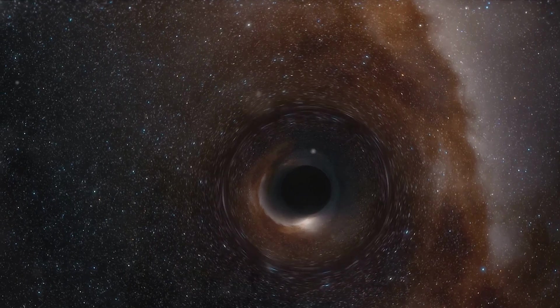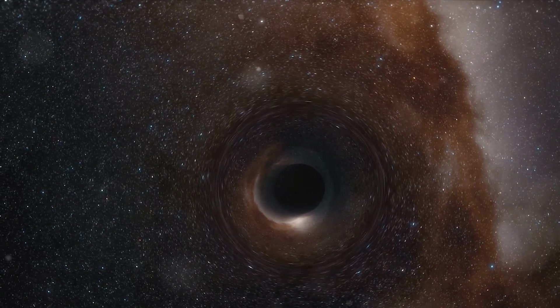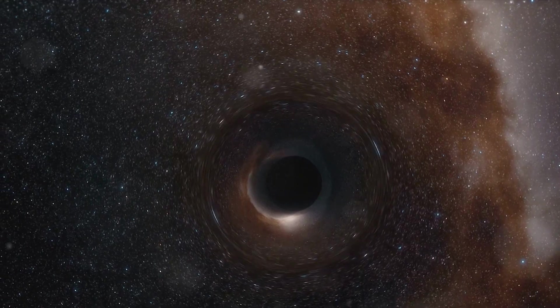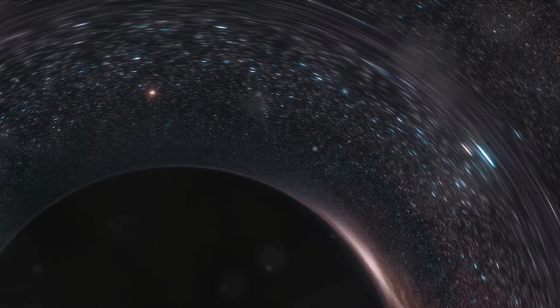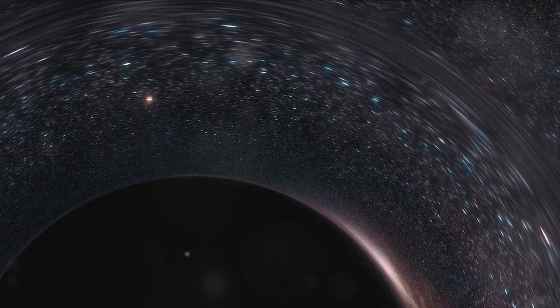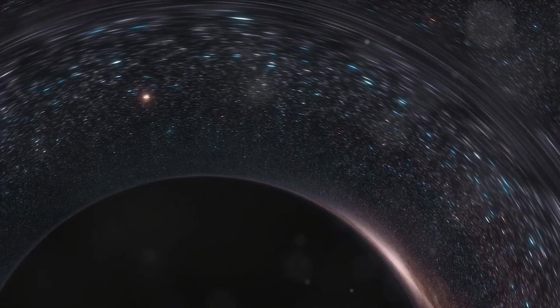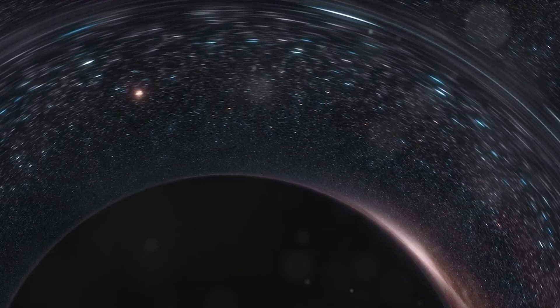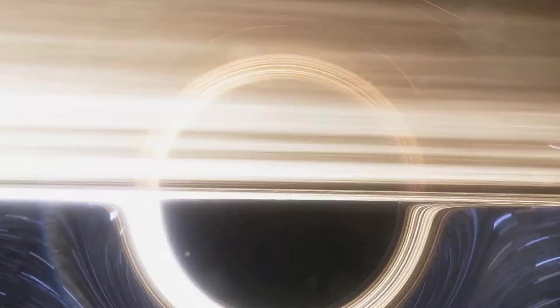A black hole is extremely heavy. It contains a lot of mass squeezed into a very small space. This makes its gravitational pull incredibly strong. So strong that anything close enough, even light, can't escape. Hence the name black hole. It's a region of space where light cannot escape, making it appear black.